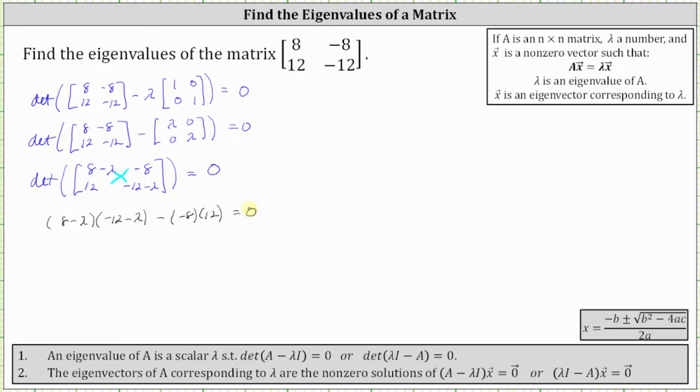Now we multiply and simplify the left side. Multiplying the two binomials, 8 times -12 equals -96. Then we have -8λ plus 12λ, which gives us +4λ.